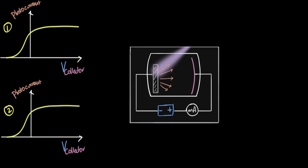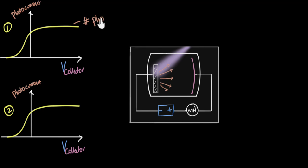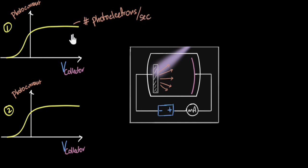The saturation current is a direct indicator of how many electrons are coming out per second — the number of photoelectrons, we call them. This is the number of photoelectrons coming out per second. You can think of this height as representing that number.